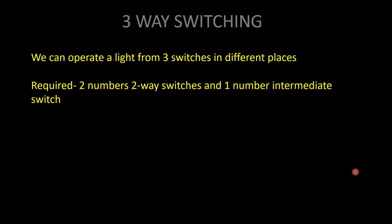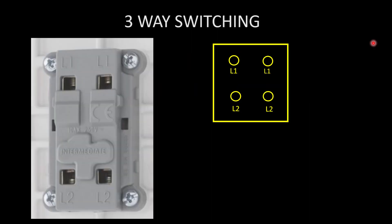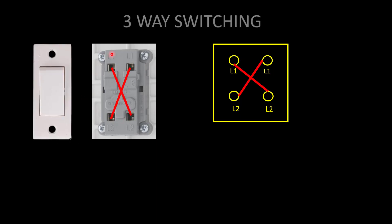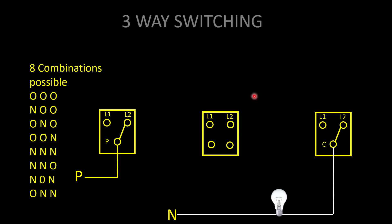The next type is three-way switching. In three-way switching, we can control a light from three different locations. For this, we need two two-way switches and one intermediate switch. The intermediate switch has four terminals — two L1s and two L2s. In off condition, the first L1 and second L1 are in contact, and the L2s are in contact. In on condition, L1 of the first row connects to L2 of the second row, and L2 of the first row connects to L1 of the second row.